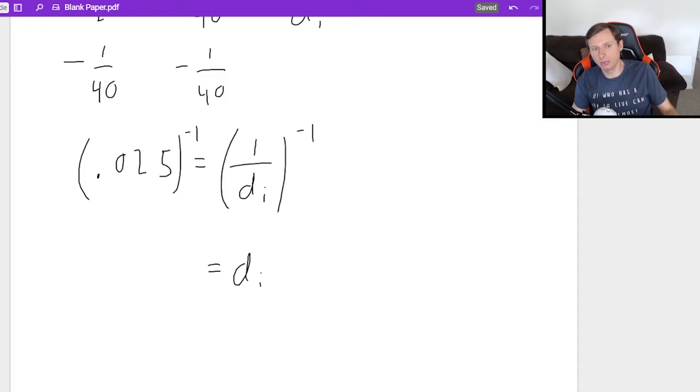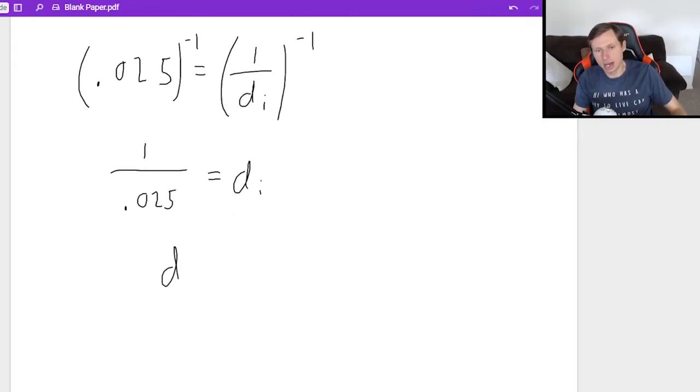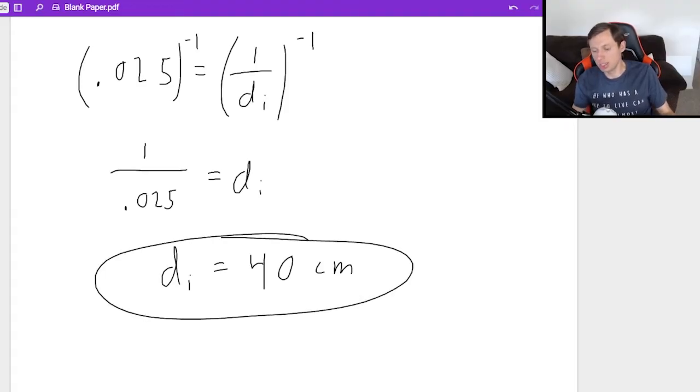Now, if you don't like negative 1 power, what you can also do is just put 1 divided by 0.025. That will get you the same thing if you don't like the negative first power. But I do like the negative first power. And DI, my image distance, is going to be a positive 40 centimeters.